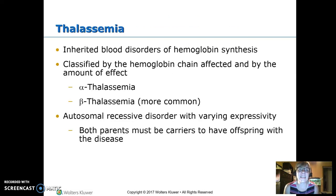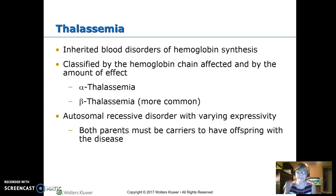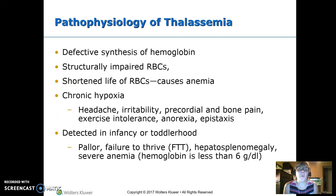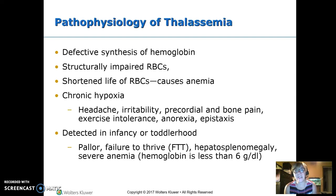Another disorder that causes similar issues is thalassemia, also inherited. We'll focus on beta thalassemia, which is autosomal recessive with varying expressivity — so not a clear-cut one-in-four ratio, but parents must be carriers. The problem is that the hemoglobin is abnormal, giving the structurally impaired red blood cell a very short half-life. This means the patient develops anemia because red cells don't live long enough.